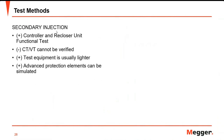The other way is through secondary injection. Both the controller and the recloser unit functional test can be performed at the same time. For more detailed testing, the recloser unit can be isolated so as not to subject it to more open and close operations. The built-in CT and VT cannot be verified. Test equipment is lighter compared to primary injection. All protection functions can be simulated, including GPS-aided tests in a smart or self-healing grid.